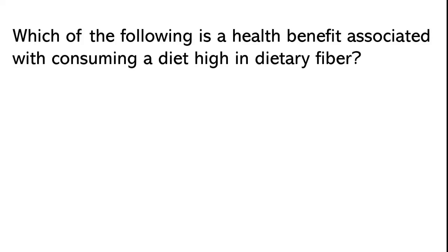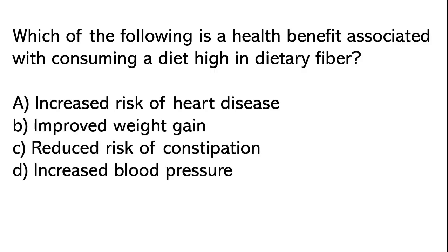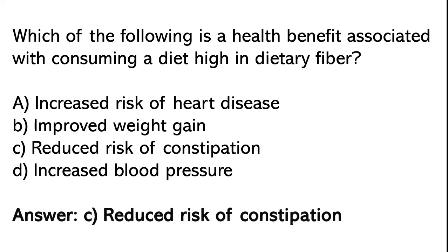Which of the following is a health benefit associated with consuming a diet high in dietary fiber? Increased risk of heart disease, improved weight gain, reduced risk of constipation, increased blood pressure. The correct answer is option C: Reduced risk of constipation.